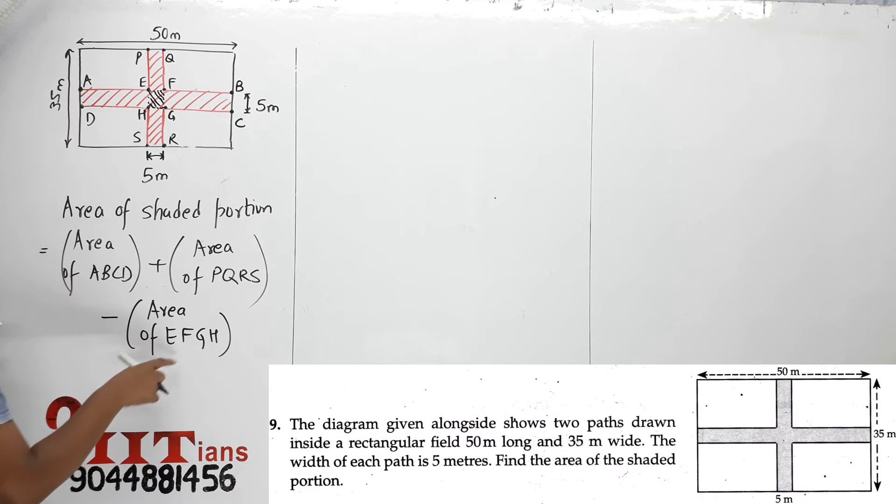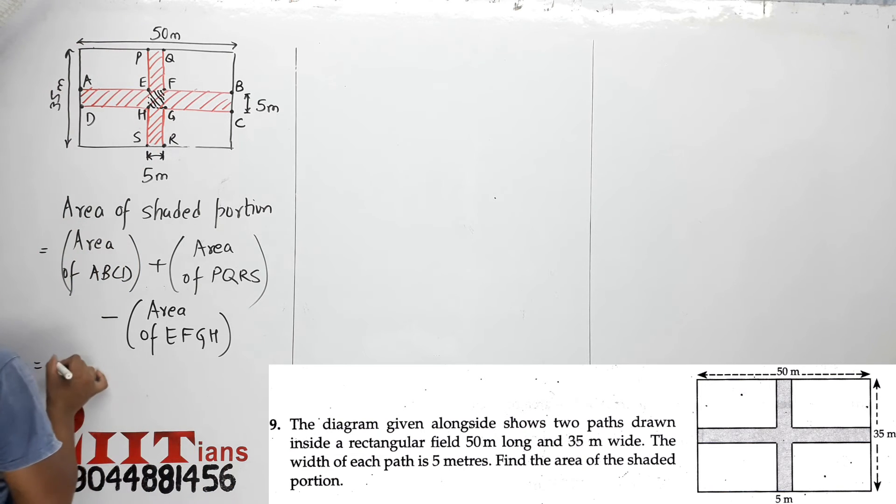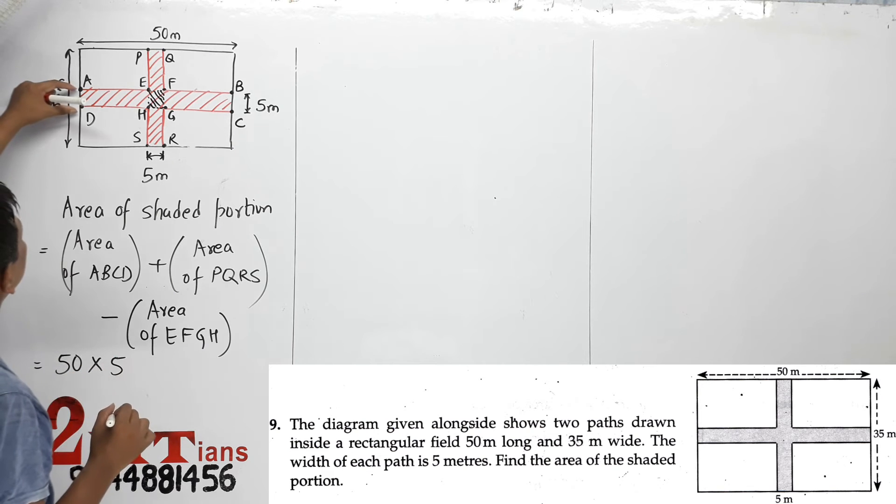You can write rectangle, rectangle, rectangle if you want. Now, what will be the area of ABCD? See, ABCD has length 50, width 5.